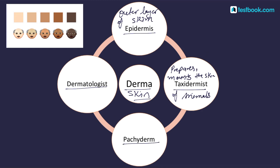A pachyderm is an animal with an unusually thick skin, like an elephant, hippopotamus, or rhinoceros.